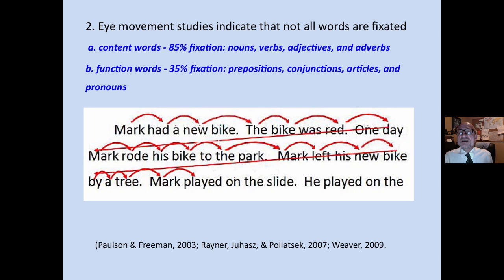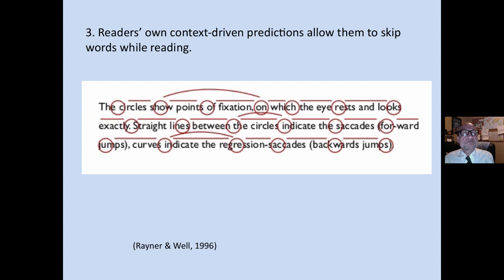Eye movement studies also indicate that not all the words are fixated on — we pass over some. Content words are fixated on approximately 85 percent of the time, and function words approximately 35 percent. So based on what's in our head — what we know about semantics, content, and syntax — some of the words are passed right over. The reader's own context-driven predictions allow them to skip words while reading.